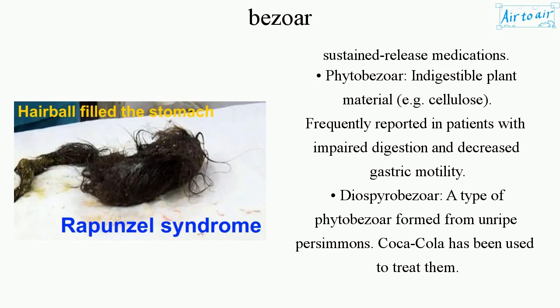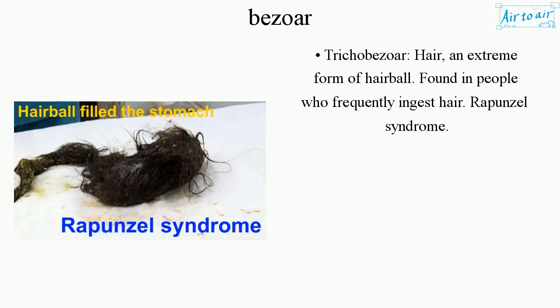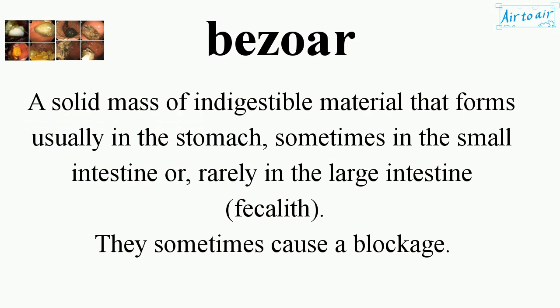Diaspirobizor: a type of phytobizor formed from unripe persimmons. Coca-Cola has been used to treat them. Trichobizor: hair — an extreme form of hairball found in people who frequently ingest hair. Rapunzel syndrome.